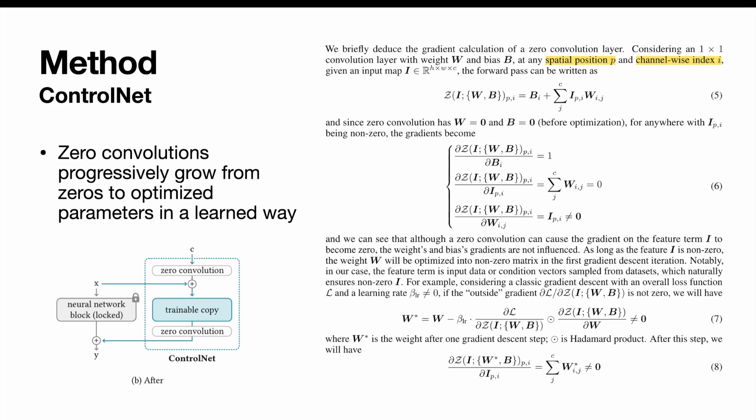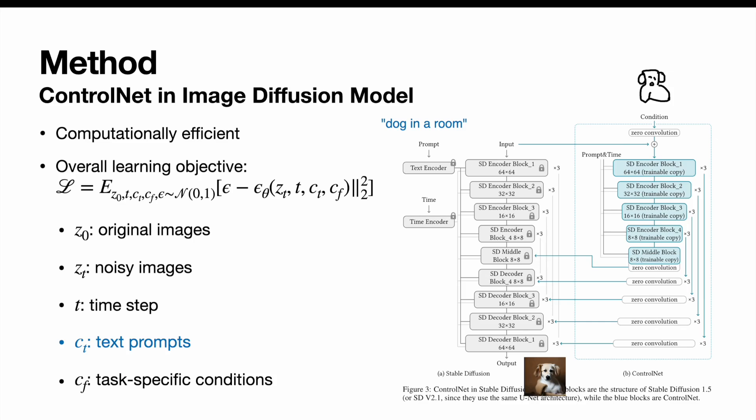Stable diffusion is a large text-to-image diffusion model trained on billions of images. The model is essentially a U-Net with an encoder, a middle block, and a skip-connected decoder. Both the encoder and decoder have 12 blocks, including the middle block, resulting in 25 blocks in total. It uses 64x64 pre-processed images for input.